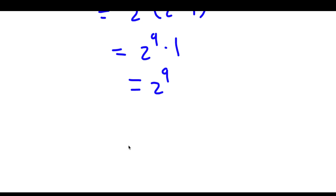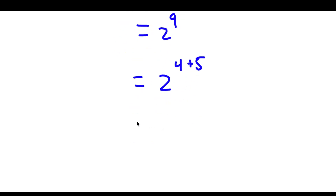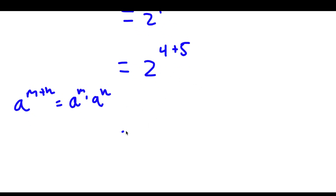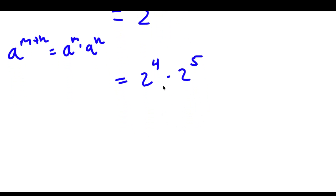Now we can actually go ahead and simplify this. So 2 to the power of 9 is the same thing as 2 to the power of 4 plus 5. And remember, if we have something in the form a to the power of m plus n, this is equal to a to the power of m times a to the power of n. So 2 to the power of 4 plus 5 is going to equal 2 to the power of 4 times 2 to the power of 5. Now 2 to the power of 4 is equal to 16, and 2 to the power of 5 is 32.